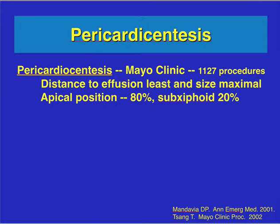Pericardiocentesis kits are hard to find in an emergency because it is such a rare procedure. You may use a 5 French, 12-centimeter femoral arterial line kit, which has everything you need. Alternatively, a regular central line kit can be used, although the needle may be a bit too large and too long for this procedure. There is a dedicated video on pericardiocentesis, so supplement this lecture with that video to learn more about the procedure.